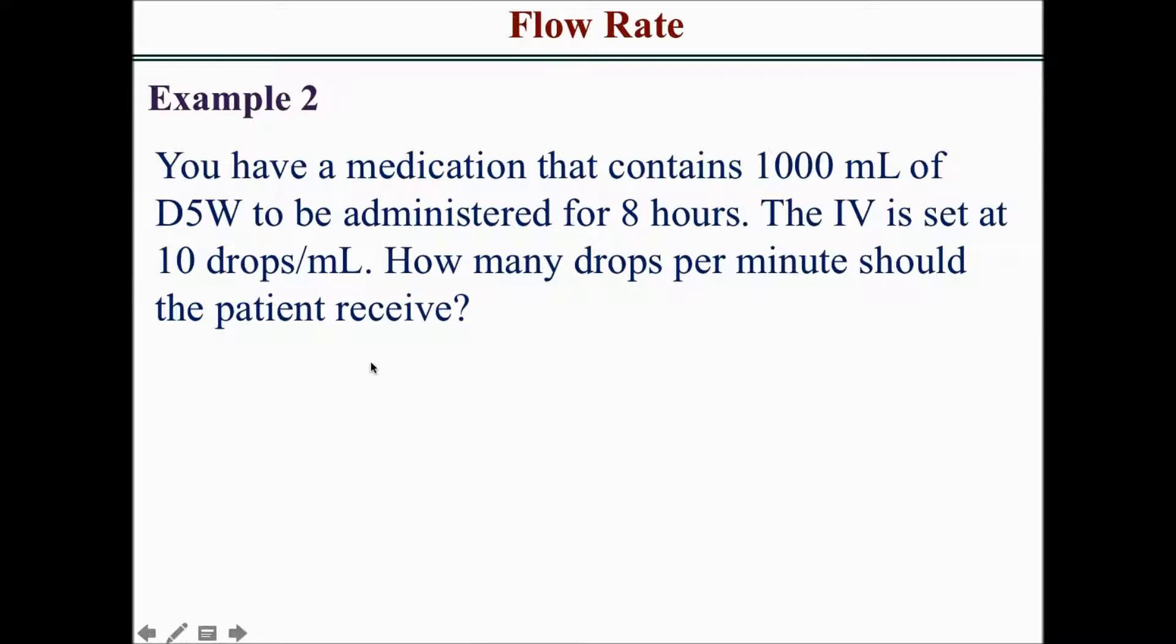For the next example, you have a medication that contains 1,000 ml of D5W to be administered over eight hours. The IV is set at 10 drops per ml. How many drops per minute should the patient receive? So the patient is getting a total of 1,000 ml of D5W administered over eight hours. They want to know how many drops per minute the patient is getting, and every 10 drops is one ml of solution.